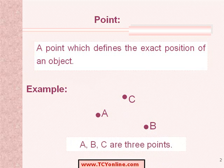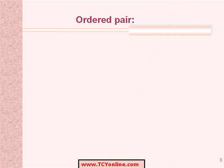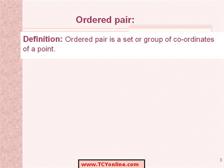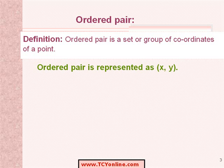Let us now understand what we mean by ordered pair. An ordered pair is a set or group of coordinates of a point. It is used to represent the position of a point within a plane. An ordered pair is represented as x, y within parentheses.